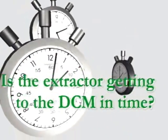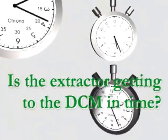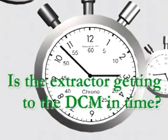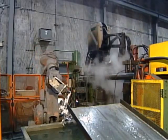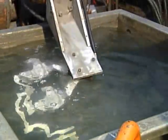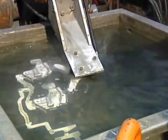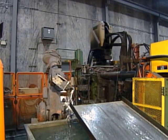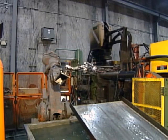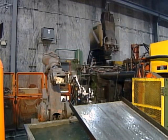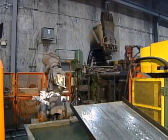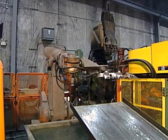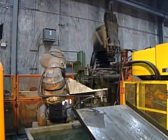Is the extractor getting to the die-cast machine in time? When the extracting device is required to quench the part and load a trim press, returning to the die-cast machine before the next part is ready can be a concern. For example, if the robot holds the part in a quench tank while the part is cooling, it may not make it back to the die-cast machine in time.